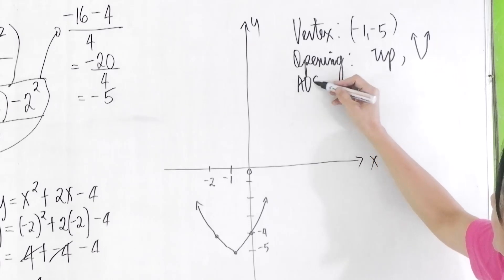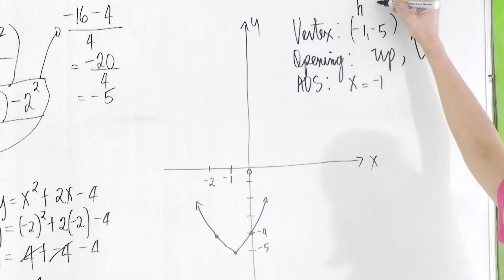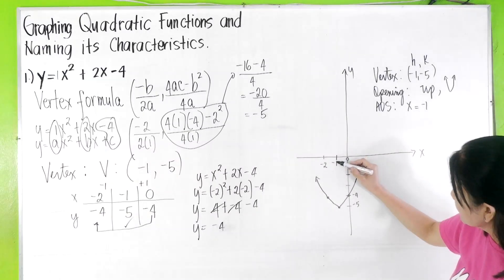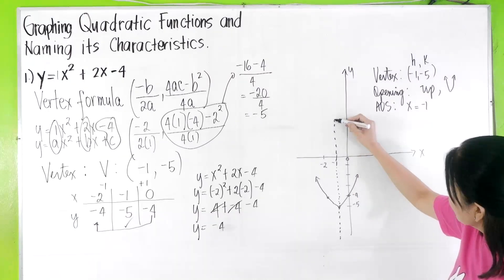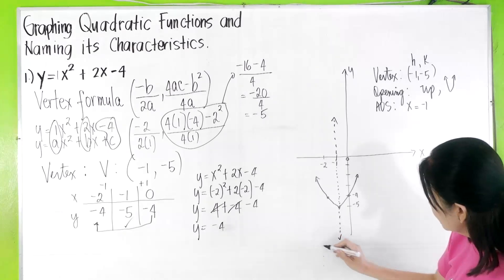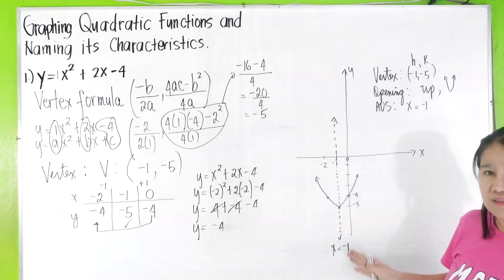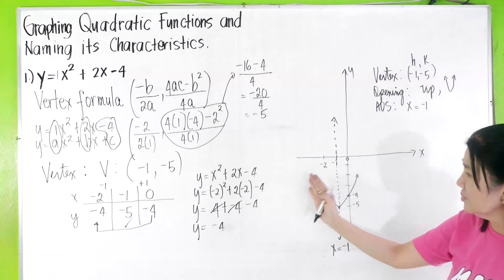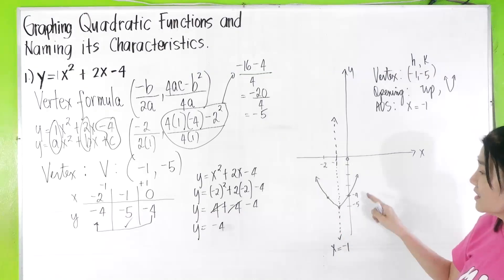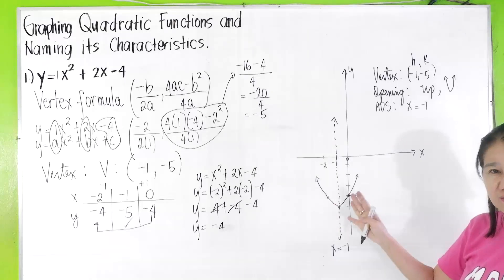The axis of symmetry will be x = h, or -1. This is always h, x = h, or x = -1. This is the axis of symmetry. This line. X = -1 is the axis of symmetry. It is the line that divides the parabola into two symmetrical figures. That's why our shortcut works. Because in the first place, a parabola is symmetrical to the right and to the left.